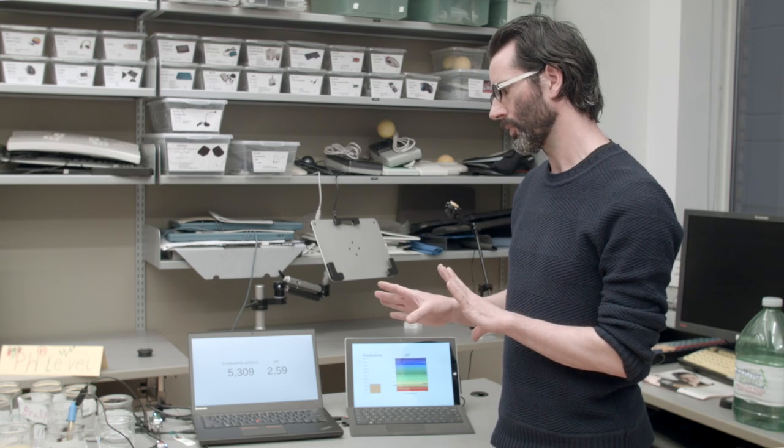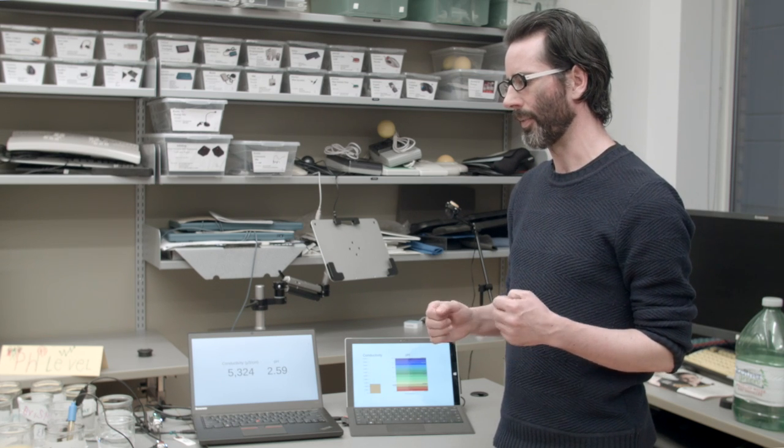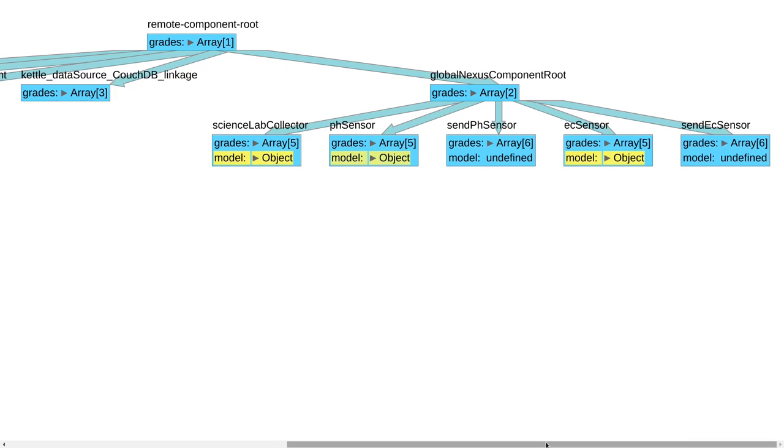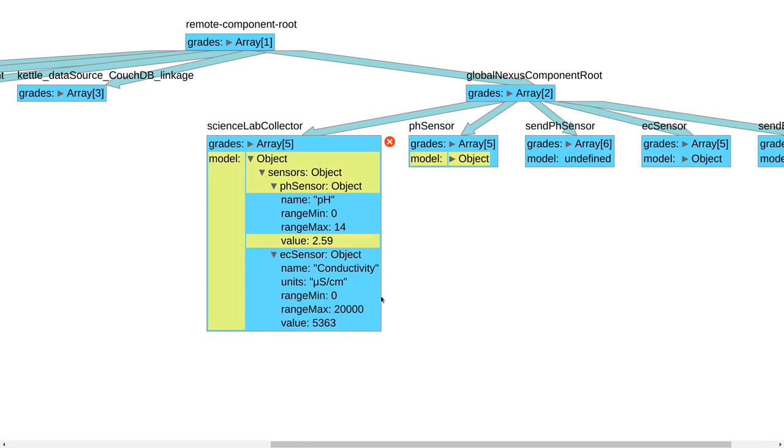And I'd like to illustrate some recent work that we've done with these sensors. One is to do some visualization of the state of the Nexus, and then the other is to support dynamic configuration of the Nexus as it's running. So what we have is we have two sensors currently connected. We have a pH sensor and we have an electrical conductivity sensor. And this visualization is showing the objects that are currently running inside the Nexus. And what I can do is I can expand these sections of the components to see the current model value.